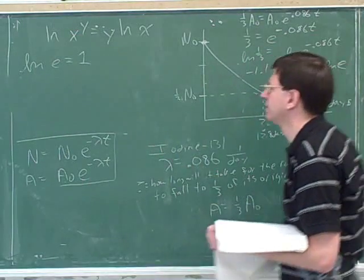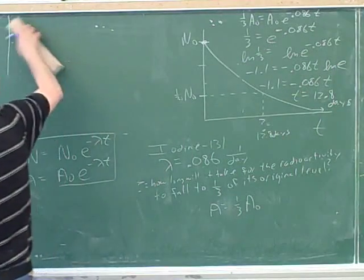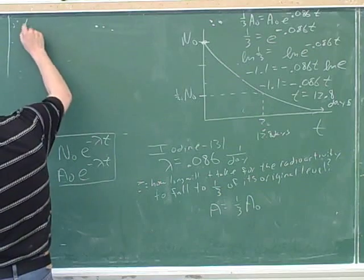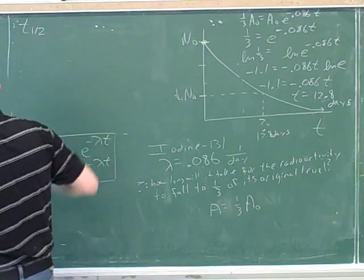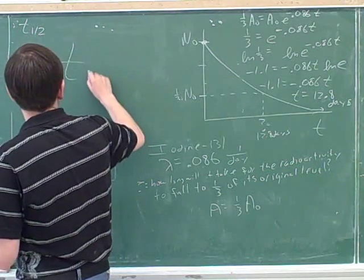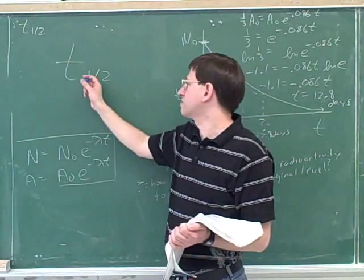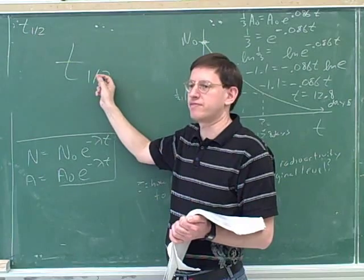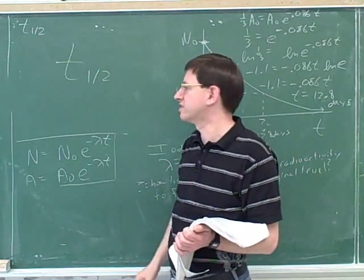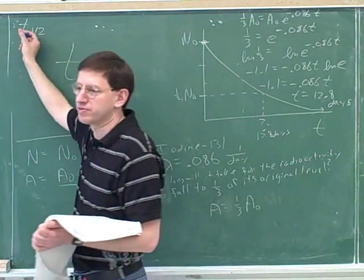So the symbol for the half-life is t with a subscript 1 half. So this is a small 1 over 2 down here for one half. It's just a subscript that's a label. So this is a good symbol for half-life.